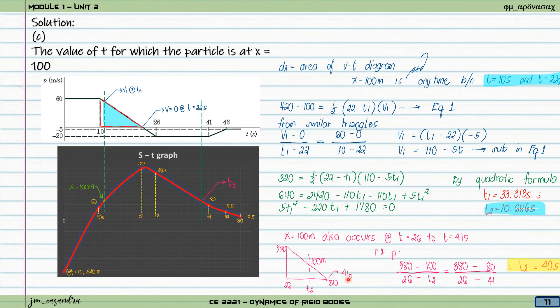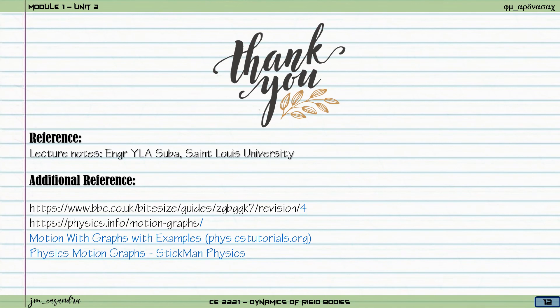The times at which the particle is at a position of 100 meters are: first at 10.686 seconds, and second at 40 seconds. That's it for motion curves. Thank you for listening. For your references, you can check the provided website.